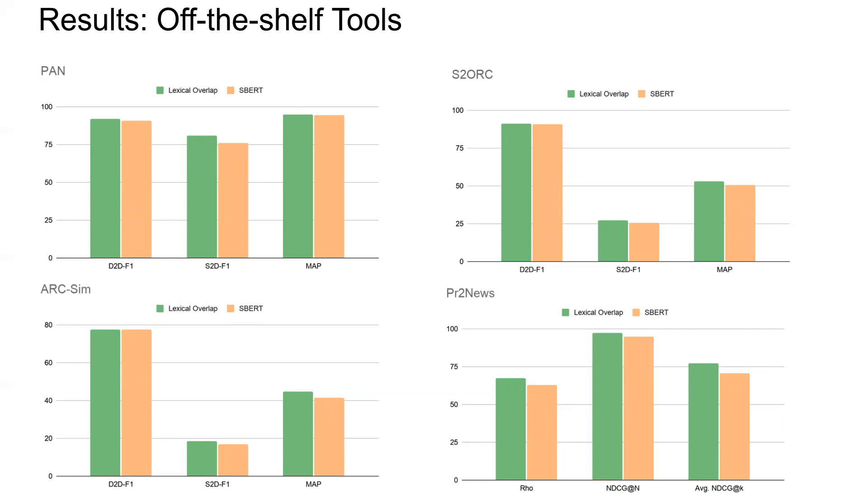We find that these results span both datasets such as PAN where there's really actually fairly high lexical overlap between derived target sentences and the sources they adapt, and datasets such as ARC-SIM on the bottom left where much of the reuse is less literal, so there's a lot more paraphrasing and summarization. So even in these harder instances where you'd expect the lexical overlap baselines to perform worse, sentence BERT does not outperform them.